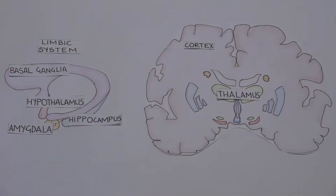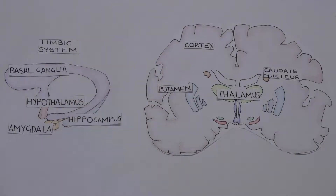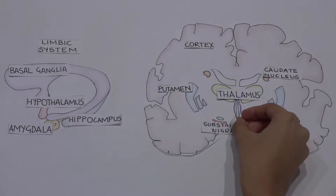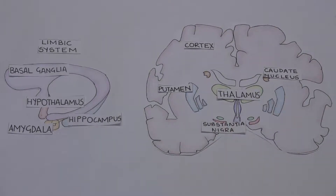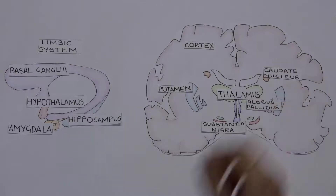The basal ganglia is found deep within the hemispheres. It consists of five structures. These are the caudate and putamen, which form the striatum. The substantia nigra makes the mesencephalon. Other structures are the globus pallidus and the subthalamic nucleus.